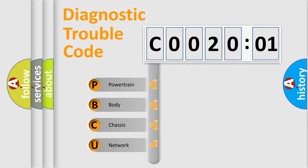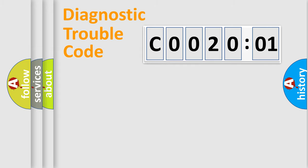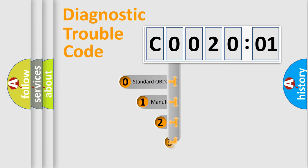We divide the electric system of automobile into four basic units: Powertrain, body, chassis, network. This distribution is defined in the first character code.